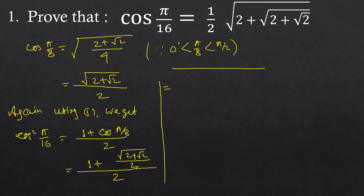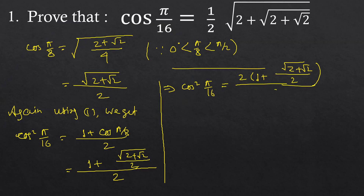It implies cos²(π/16) is equal to, now multiplying both numerator and denominator by 2, we get (2 plus √(2 plus √2)) by 4, which is equal to (2 plus √(2 plus √2)) by 4.